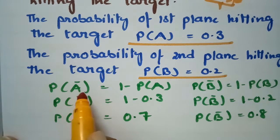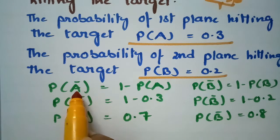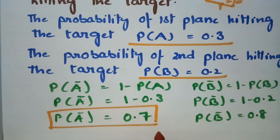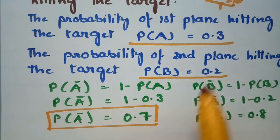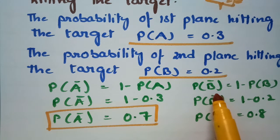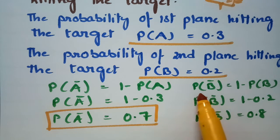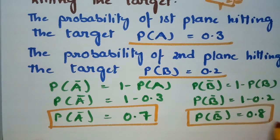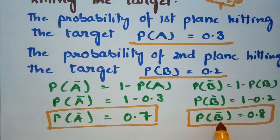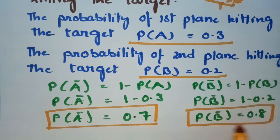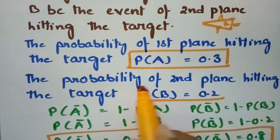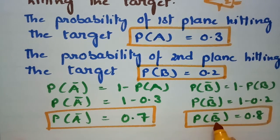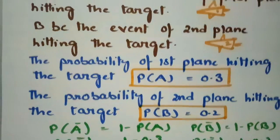The probability that the first plane misses the target is P(Ā) = 1 − P(A) = 1 − 0.3 = 0.7. The probability that the second plane misses the target is P(B̄) = 1 − P(B) = 1 − 0.2 = 0.8. So: P(A) = 0.3, P(B) = 0.2, P(Ā) = 0.7, P(B̄) = 0.8.